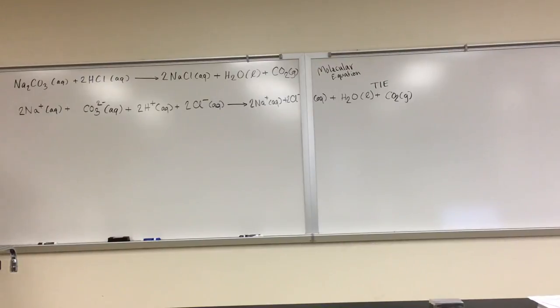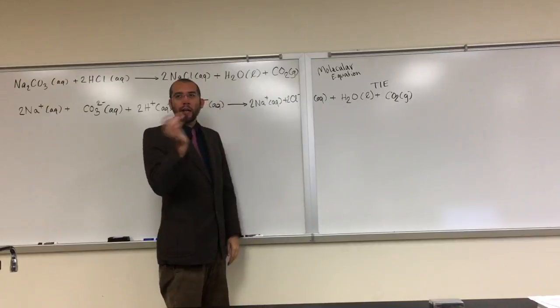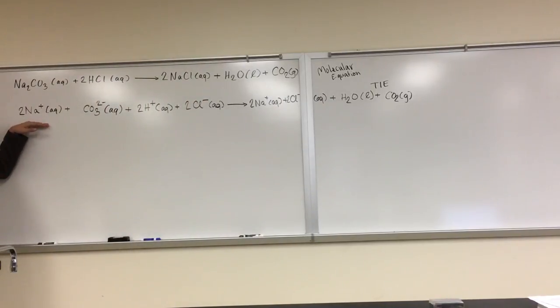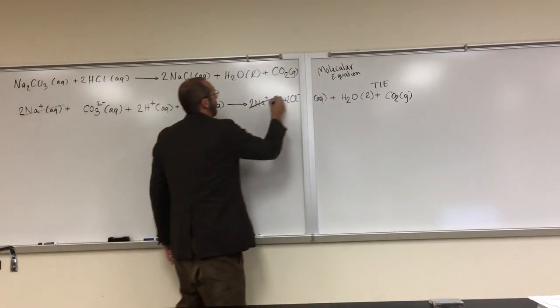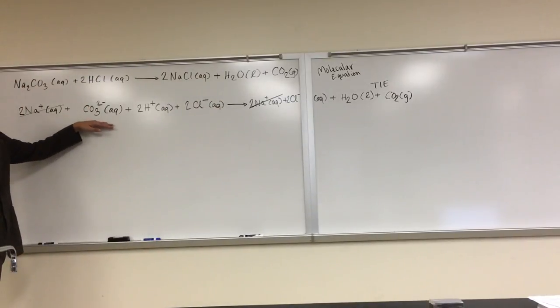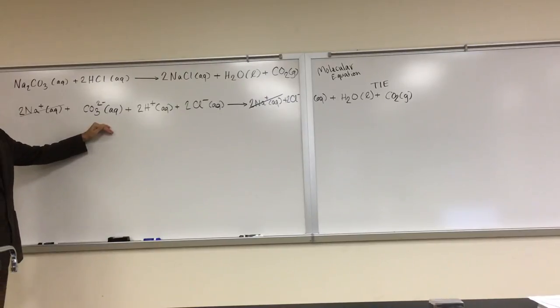And the net ionic equation, we just, if we see something that's on one side of the reaction, and it's on the same as on the other side of the reaction, we just cancel them both out. So you see here, 2Na+ aqueous, do we see that on the other side of the reaction? So we can just cancel that out. CO32- aqueous, do we see that on the other side of the reaction? CO32- aqueous? No. So, so can we cancel it out? No.